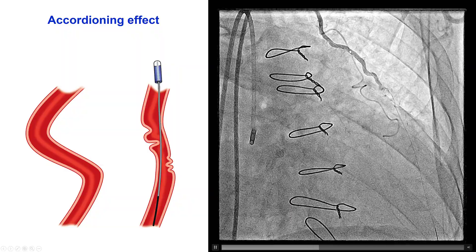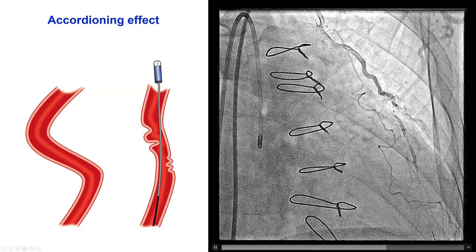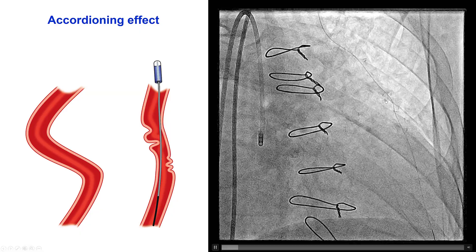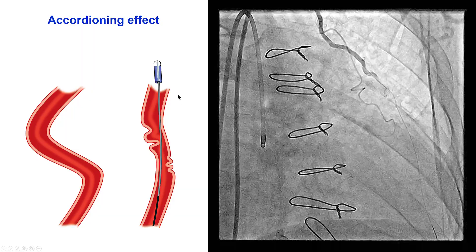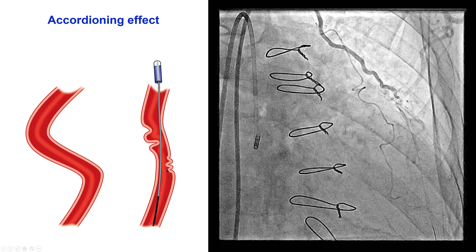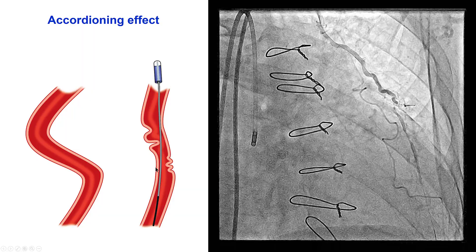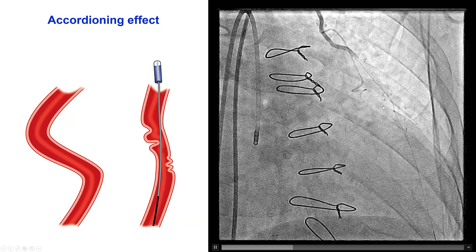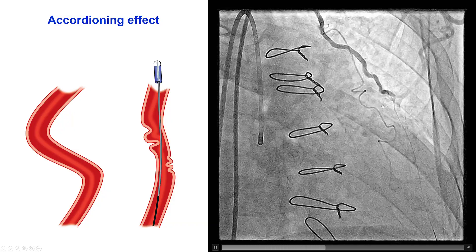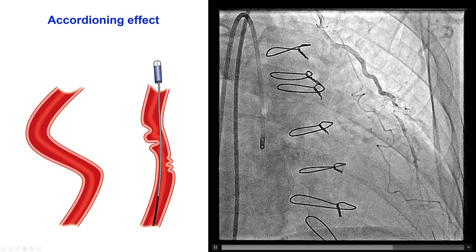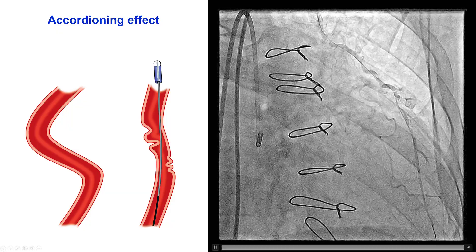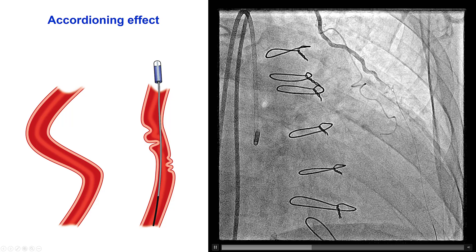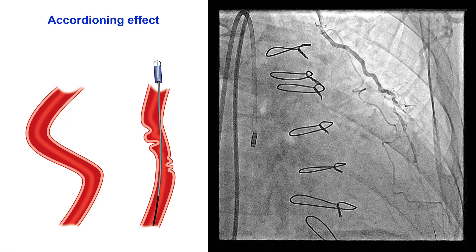However — and this is one of the known problems when performing PCI in LIMA — straightening of the LIMA from the guide wire did cause this accordioning effect or pseudo-lesion effect. We can see that flow is much worse now, and the patient actually did have some chest discomfort and EKG changes. So we knew this was not a position we could maintain for a long period of time, and we had to move fairly quickly.